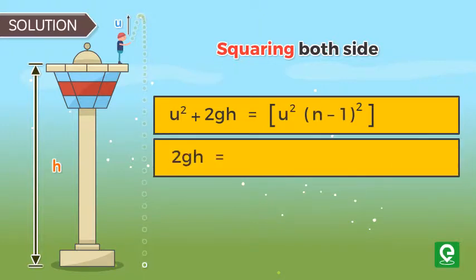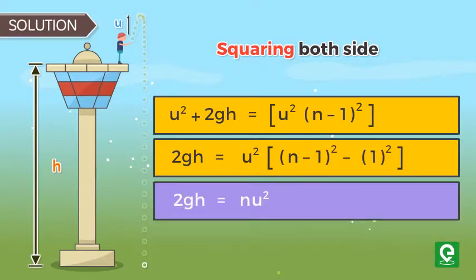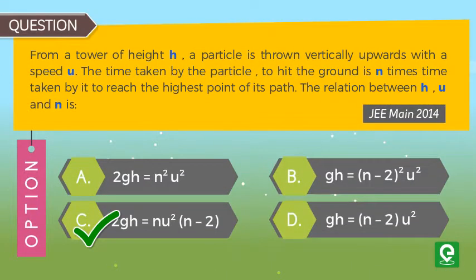2gh is equal to n minus 1 square minus 1 square. 2gh equal to n u square into n minus 2. Hence option c is correct.